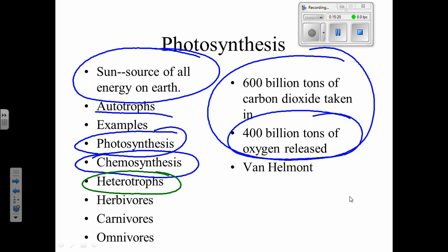Why aren't those numbers even? In the equation, for every six CO2s you take in, you give off six O2s — so why aren't those numbers equal? It's because CO2 has an extra carbon, which means it weighs more. CO2 is heavier than O2 because of that carbon atom.